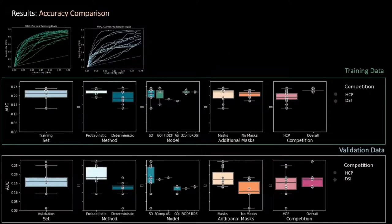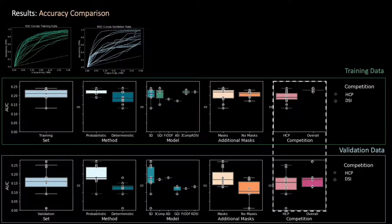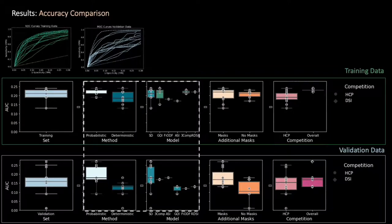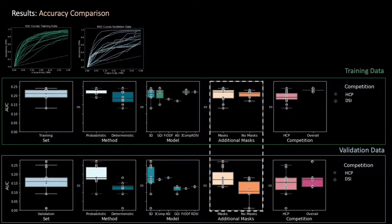For both training and validation case, we look at the accuracy measure as the area under the curve for different settings across submissions. Overall accuracy is higher for the DSI acquisition scheme. Interestingly, while both probabilistic and deterministic tractography and most methods seem to perform fairly similar for the training data, probabilistic tractography and spherical deconvolution show much higher accuracy in the validation case. And the same is true for the use of additional masks to constrain tractography.